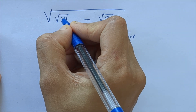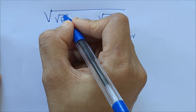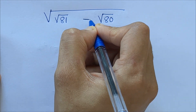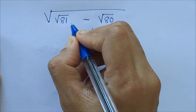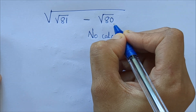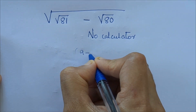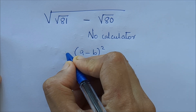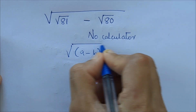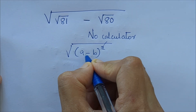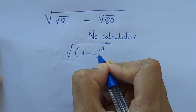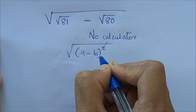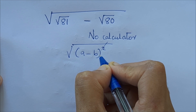One method is to convert root 81 minus root 80 into a perfect square — something like (a minus b) all squared — so that the root and the square cancel and it is easy to get the simplified answer. That's what we are going to do.